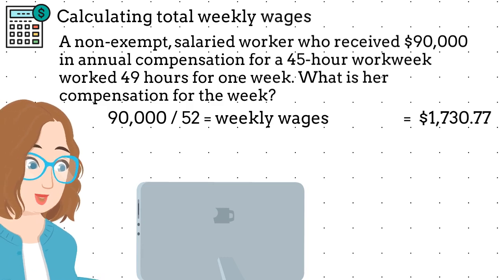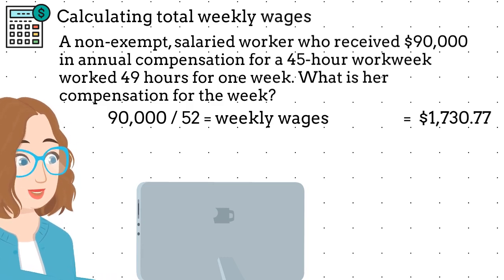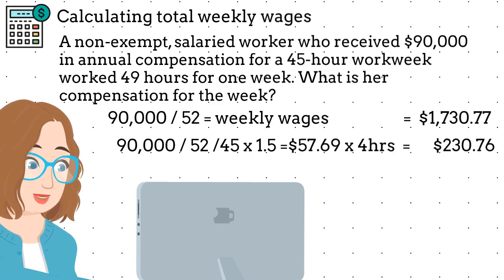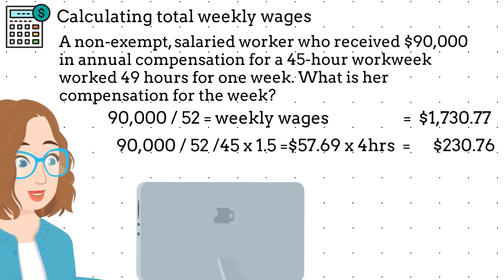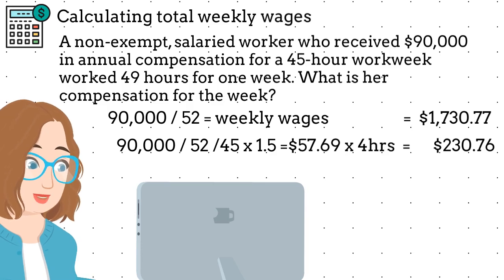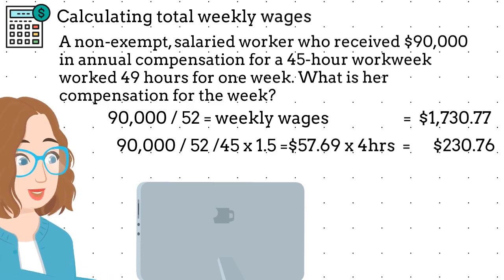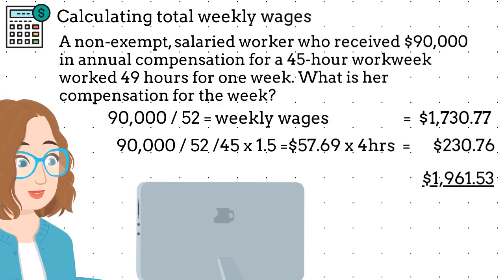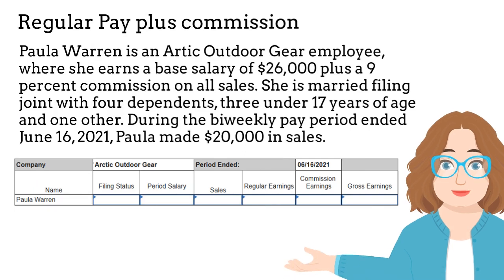The employee also worked 4 hours of overtime and we need to calculate the overtime pay. We do that by taking the annual compensation and dividing it by 52 for the number of weeks per year. Then we divide it by 45 for the number of hours per workweek. We multiply it by 1.5 to get the overtime rate, and then multiply it by 4 hours of overtime. The result is $230.76. Finally, we add the overtime pay and the regular pay to get the total gross pay for this week.